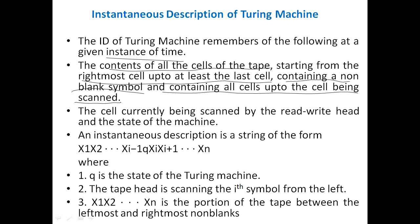The input tape contains all the symbols — all the symbols which can be taken as input — and it also observes non-blank symbols. Non-blank symbols are nothing but cells which contain some data or symbols. This Turing machine ID also contains the current cell being scanned by the read-write head — the current cell symbol which is going to be read or written by the head.